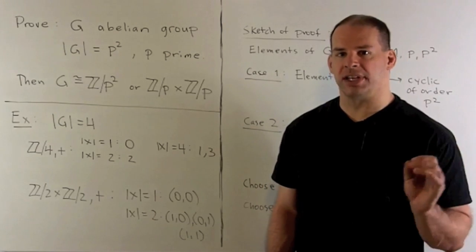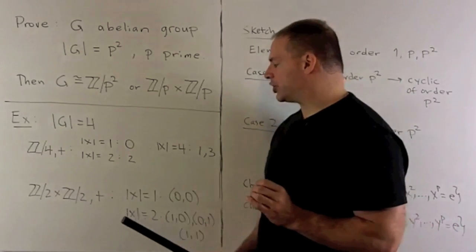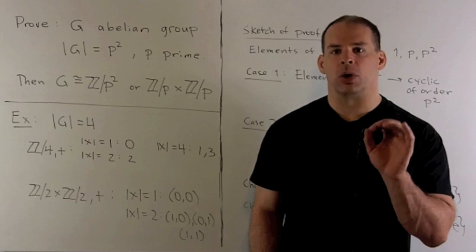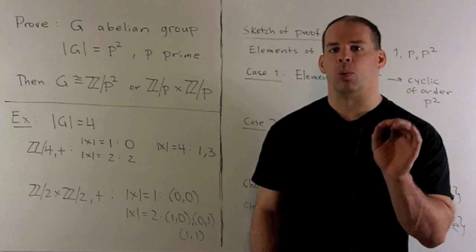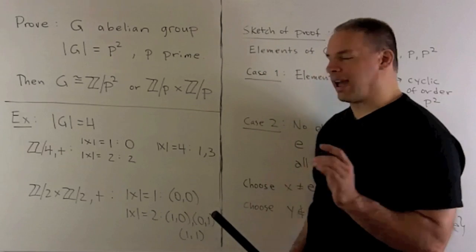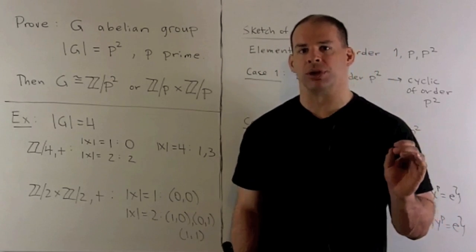For Z2 cross Z2, again we use addition. So these are going to be ordered pairs. Elements are going to be 0 or 1. In this case, 1 plus 1 is 0. So the identity element is going to be (0,0). And then every other element is going to have order 2.